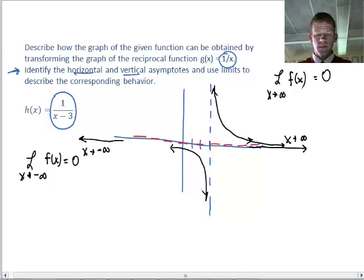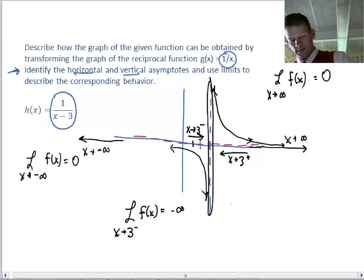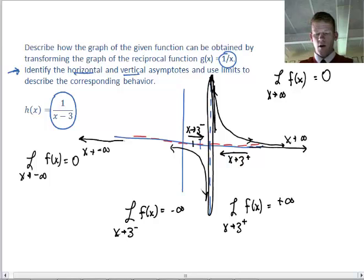On the limit as x approaches 3, but from the left, that would be my limit. This limit will describe the vertical asymptote. As x approaches 3 from the left of f(x), that's going to head to negative infinity. And then we have the other limit as x approaches 3 from the right of f(x). That's going to head off to positive infinity.